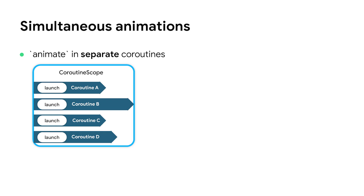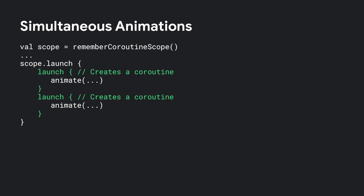What if we want to run animations at the same time? We can put them in separate coroutines to run them in parallel. To achieve that, we need a coroutine scope — a coroutine scope defines a lifecycle for new coroutines created in that scope. Inside the scope, we can use the coroutine builder function launch to create new coroutines. Launch is non-blocking, which allows us to create multiple coroutines in parallel so animations run simultaneously. Each launch creates a new coroutine, and since launch is non-blocking, the new coroutines will be created in parallel and the animations will start running in the same frame. Now we have simultaneous animations.